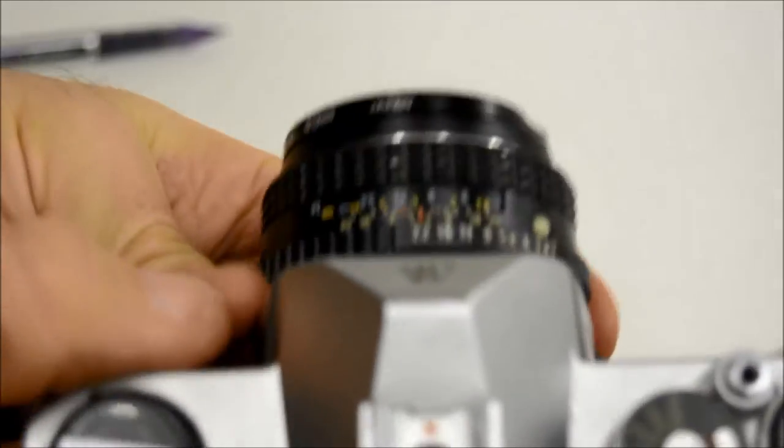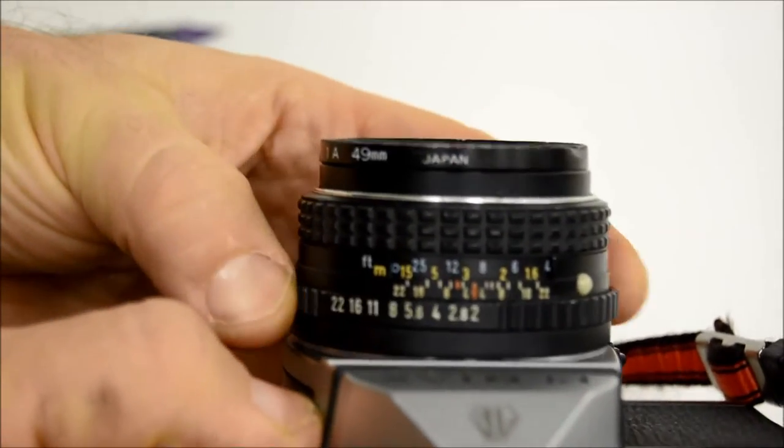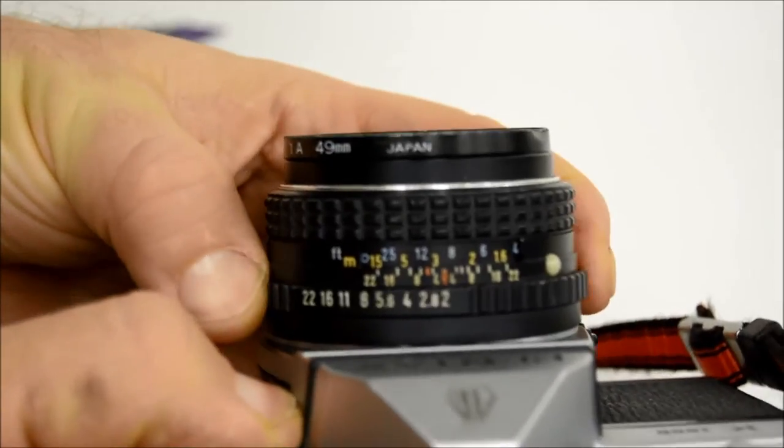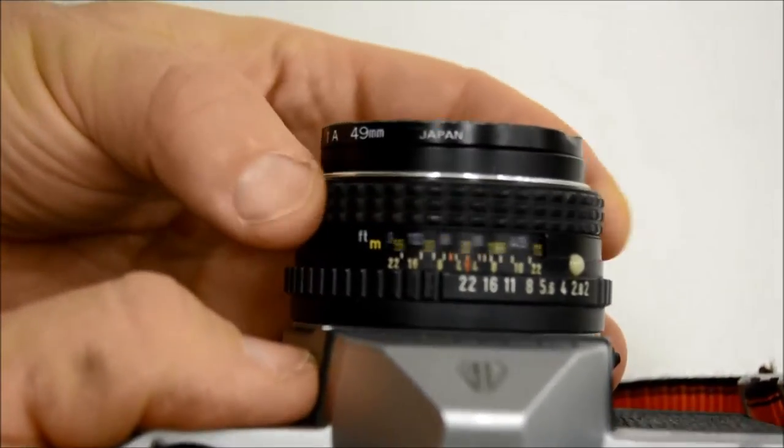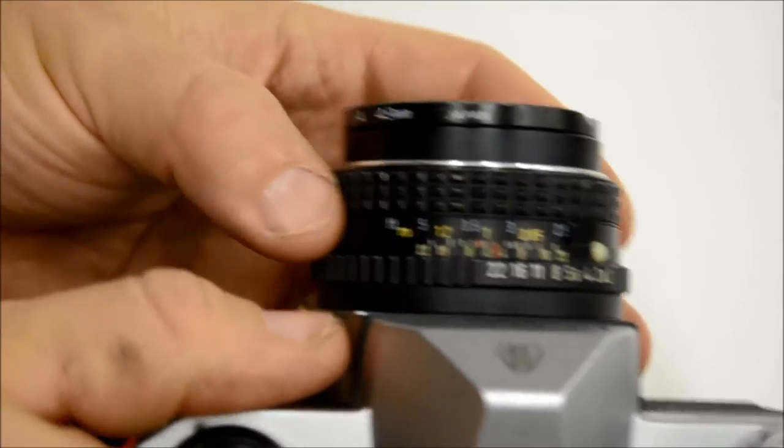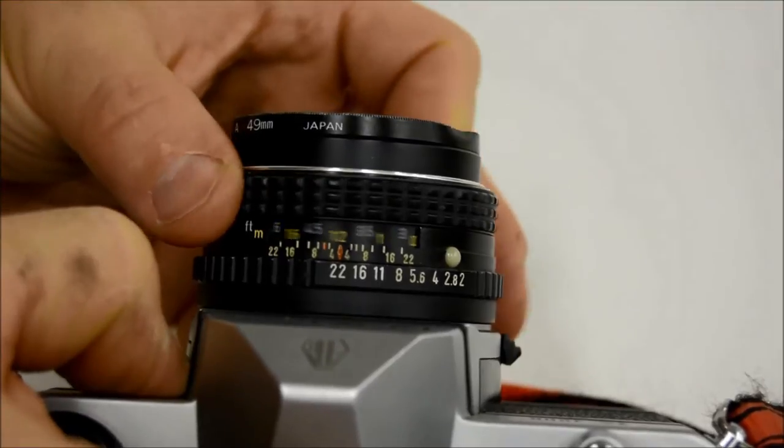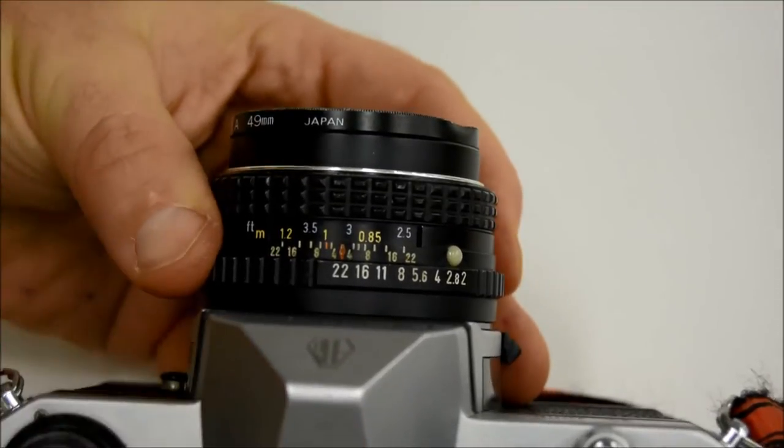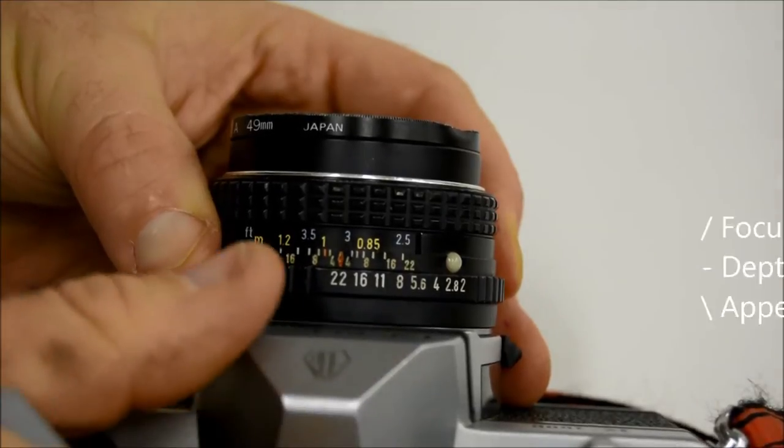And here's our lens. So on the front of our lens, we have our distance, our aperture right here, f2 all the way to f22. And then we have our distance scale on the lens itself, showing us what's going to be in focus. And in between, we have what's called the depth of field scale, which are these little numbers here. And that's what I'm going to show.